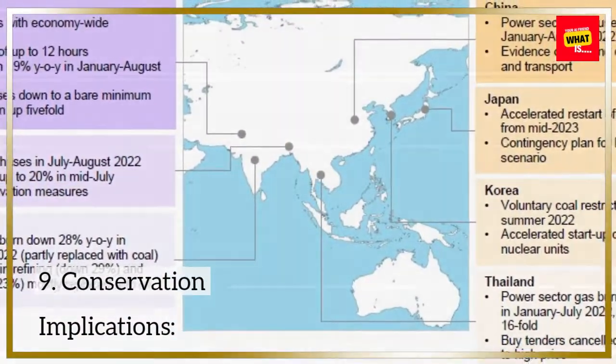Conservation Implications. Understanding migration is crucial for conservation efforts. Conservationists work to identify and protect critical stopover sites and breeding grounds along migratory routes. Collaborative international efforts are essential to ensure the conservation of these species and their migratory pathways.